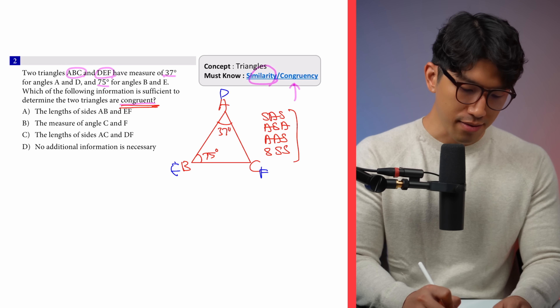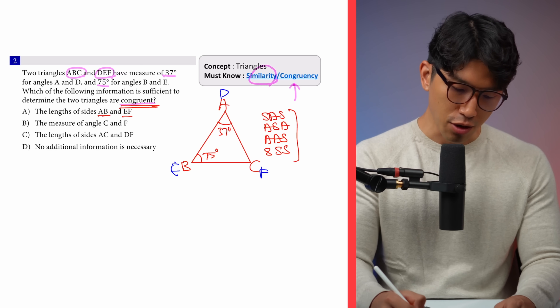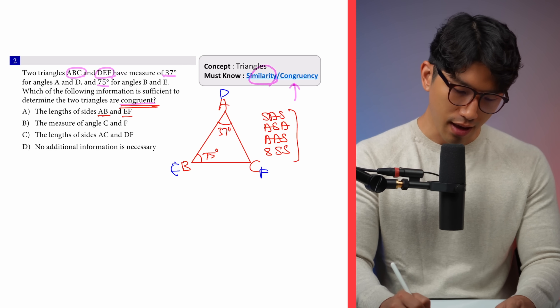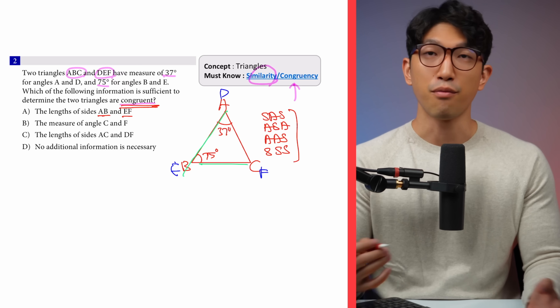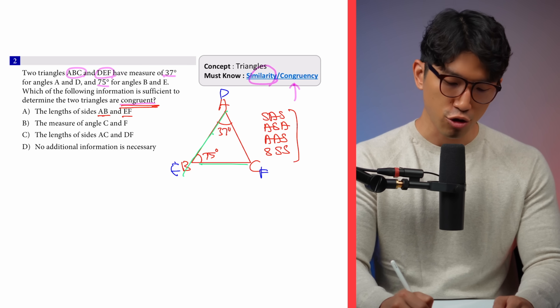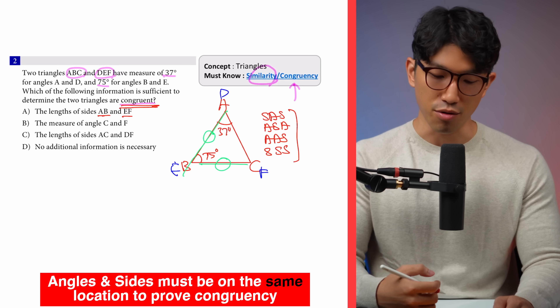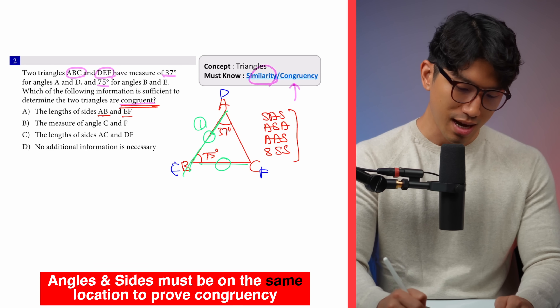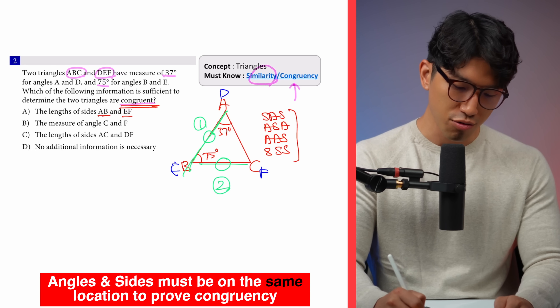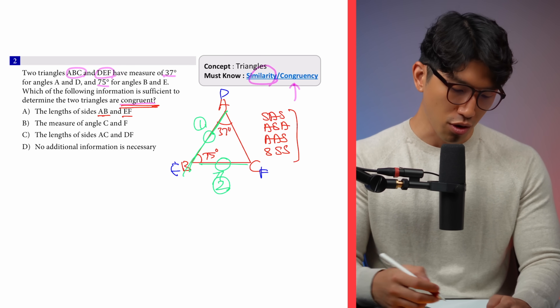Let's look at choice A: the length of side AB and EF. If we know AB and EF, unfortunately this is not going to work because these two parts are from different sides of the triangle — AB is on triangle one's side but EF is on a different side on triangle two. So choice A is not going to work.